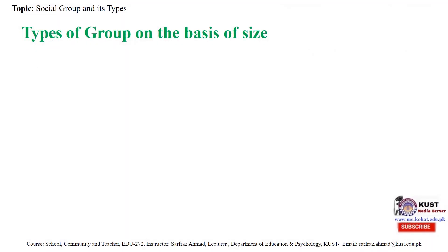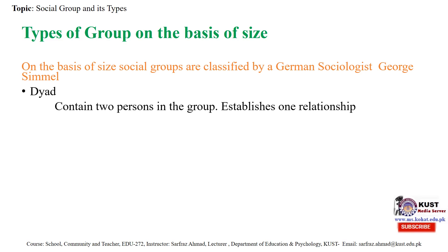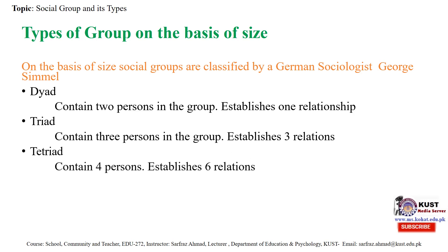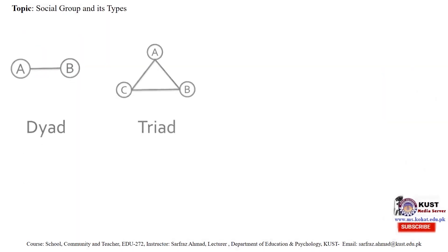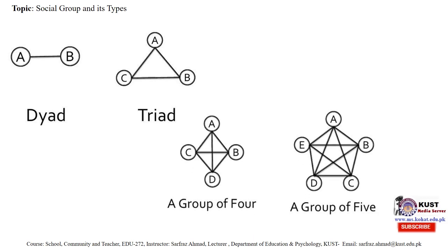On the basis of size, social groups are classified by German sociologist George Simmel. A dyad contains two persons in a group and establishes one relationship. A triad contains three persons and establishes three relations. A tetrad contains four persons and establishes six relations. A pentad contains five persons and establishes ten relations. So if we have a dyad there are two persons A and B, a triad has three persons A, B, and C, and then groups of four and five.